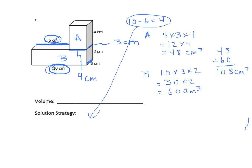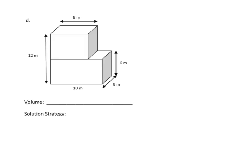Let's go on to the next example. I'm going to label these rectangle A and B. Starting with B — we have everything: the length, the width, and the height. For A, we have the length, but we don't have the height or the width. Looking at the representation, we can see that the width of A is the same as the width of B, so both are equal to 3.